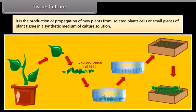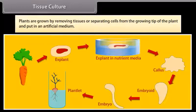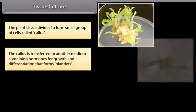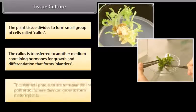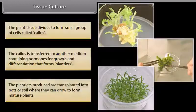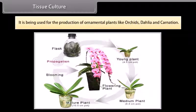Tissue culture is the production or propagation of new plants from isolated plant cells or small pieces of plant tissue in a synthetic medium or culture solution. Plants are grown by removing tissues or separating cells from the growing tip of the plant and placing them in an artificial medium. The plant tissue divides to form a small group of cells called callus. The callus is transferred to another medium containing hormones for growth and differentiation that forms plantlets. The plantlets produced are transplanted into pots or soil where they can grow into mature plants. It is also known as micropropagation in vitro because it takes place outside the parent plant body in a test tube using an artificial environment. It is being used for the production of ornamental plants like orchids, dahlia, and carnation.